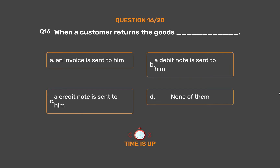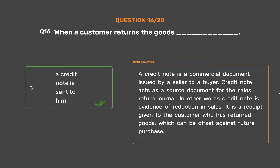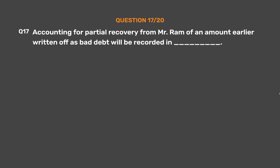The correct answer is option C: a credit note is sent to him. A credit note is a commercial document issued by a seller to a buyer. It acts as a source document for the sales return journal — in other words, a credit note is evidence of a reduction in sales. It is a receipt given to the customer who has returned goods, which can be offset against future purchases.